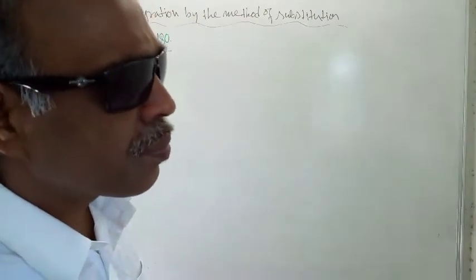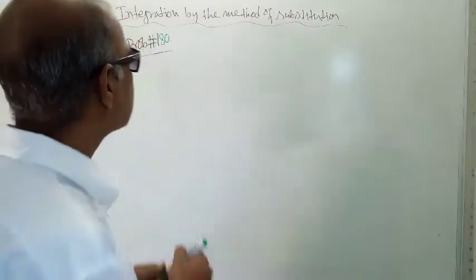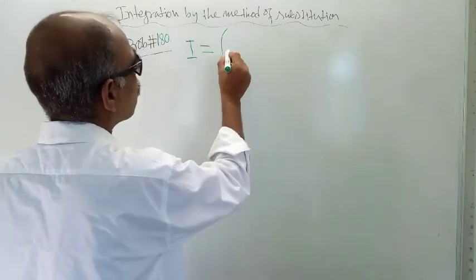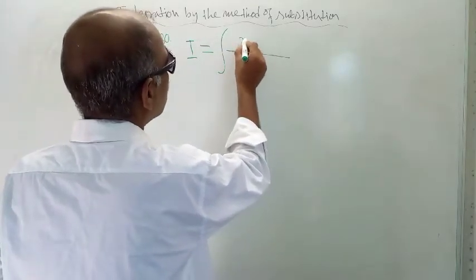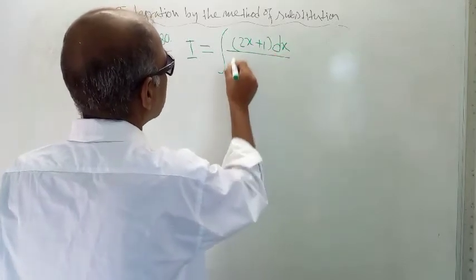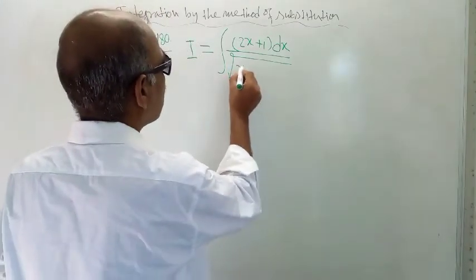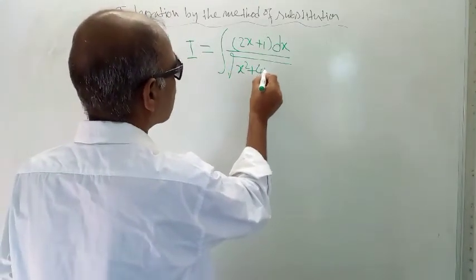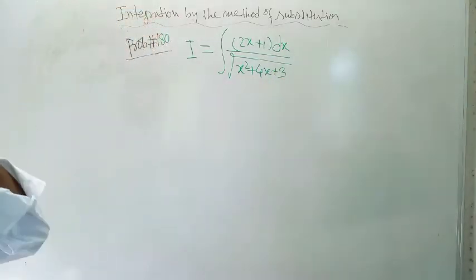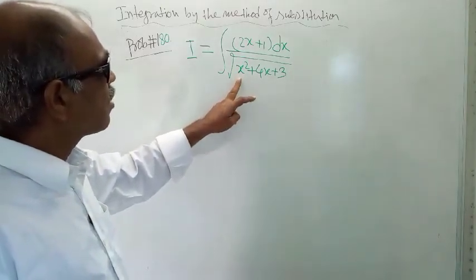The problem is this integration: I is equal to the integration of (2x + 1) dx. In the denominator appears root over of x squared plus 4x plus 3.